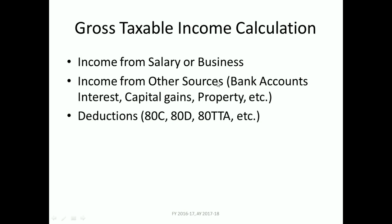The second thing is income from other sources. This can include bank account interest, capital gains from investments in mutual funds or stocks, and rent that you receive from property. Basically, whatever income you generate other than your salary or business is added under income from other sources.